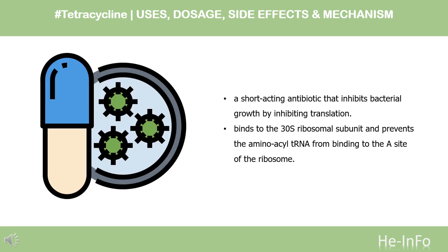Pharmacodynamics: Tetracycline is a short-acting antibiotic that inhibits bacterial growth by inhibiting translation. It binds to the 30S ribosomal subunit and prevents the aminoacyl tRNA from binding to the A site of the ribosome. It also binds, to some extent, to the 50S ribosomal subunit. This binding is reversible in nature. Additionally, tetracycline may alter the cytoplasmic membrane of bacteria, causing leakage of intracellular contents such as nucleotides from the cell.